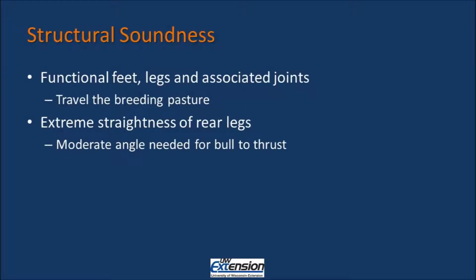Structural soundness. You want to make sure that your bull has functional feet, legs, and associated joints. If he does not, he is unable to walk the breeding pasture and access all of the cows that may be available to him. You also want to make sure that the rear legs are not extremely straight. Having a moderate angle to the legs is necessary in order for the bull to mount and to thrust.